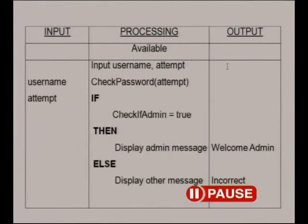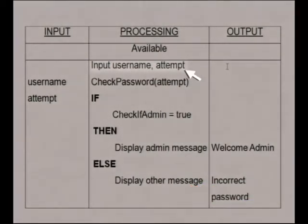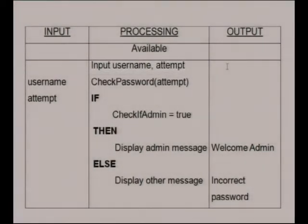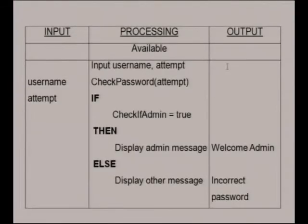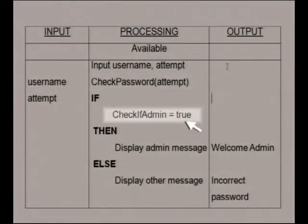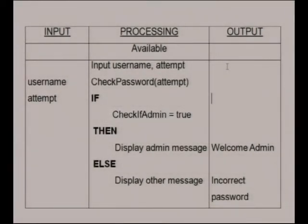Start with the fields. The username and password attempts are local variables, not fields in an object. I can't see any fields for an object. Is that because there are private fields encapsulated in the object? Very good, Tabo. What about methods? I think when the password is checked and when the admin right is checked to see if it's true or false, those must be public methods of the object.